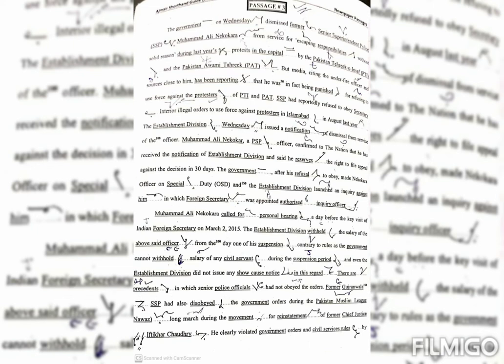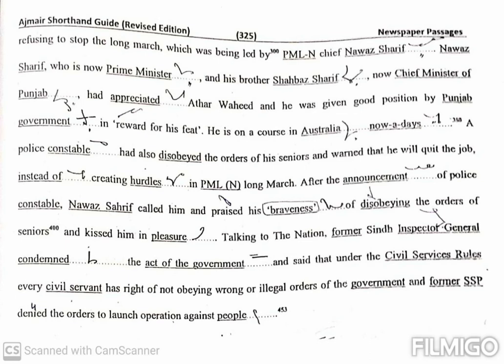He clearly violated government orders and civil services rules by refusing to stop the Long March, which was being held by PMLN Chief Nawaz Sharif. Nawaz Sharif, who is now Prime Minister, and his brother Shahbaz Sharif, now Chief Minister of Punjab, had appreciated Athar Waheed and he was given good position by